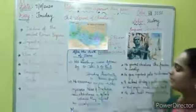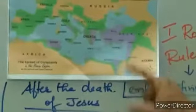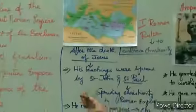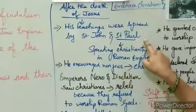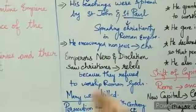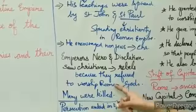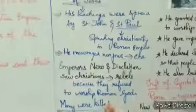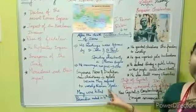The name of the chapter is 'Spread of Christianity' and here you can see the green shaded part in the map. This is the spread of Christianity during the Roman Emperor Constantine. After the death of Jesus Christ, his teachings were spread by two people — Saint John and Saint Paul. Saint Paul played an active role in spreading Christianity in the Roman Empire. He encouraged the non-Jews to convert as Christians, and Emperor Nero and Diocletian saw Christians as rebels because they refused to worship Roman gods, and many were killed during this period.